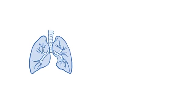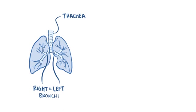If we take a look at the lungs, you've got the trachea, which branches off into the right and left bronchi, and then continues to branch into thousands of bronchioles.